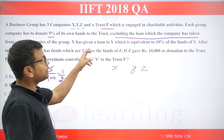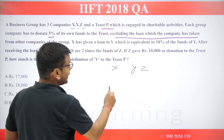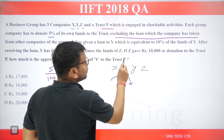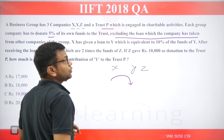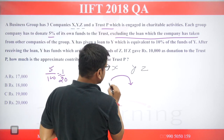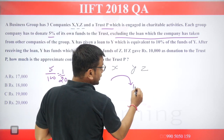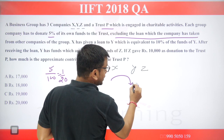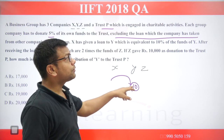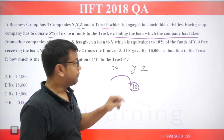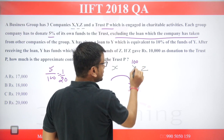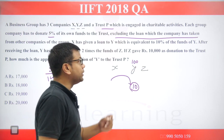X has given a loan to Y, which is equal to 10% of the funds of Y. So Y had the funds — if Y had 100 rupees, then the loan given by X is 10 rupees.